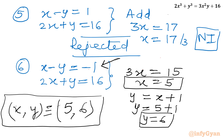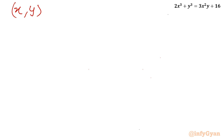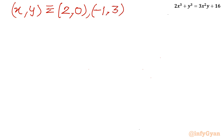So our answer is ready. The three integer ordered pairs are (2, 0), (−1, 3), and (5, 6). Now I will cross-examine these values by substituting back into the original equation.